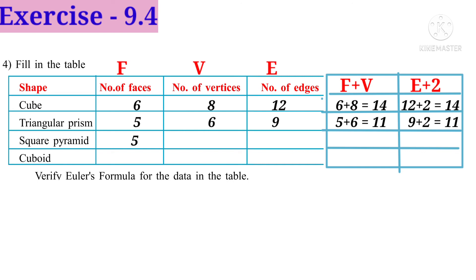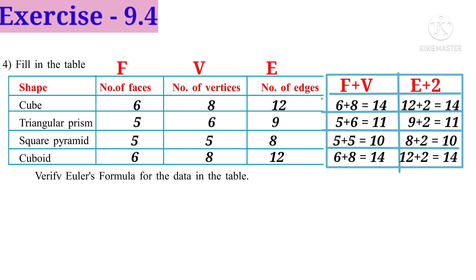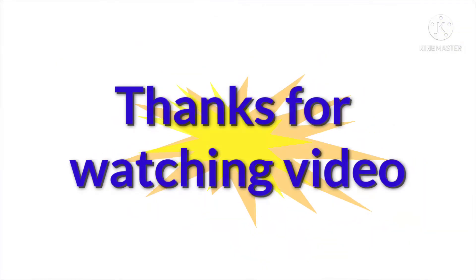For a square pyramid: faces are 5, vertices are 5, edges are 8. F plus V equals 5 plus 5 equals 10, and E plus 2 equals 8 plus 2 equals 10 — both equal. For a cuboid: faces are 6, vertices are 8, edges are 12. F plus V equals 6 plus 8 equals 14, and E plus 2 equals 12 plus 2 equals 14 — both equal. So Euler's formula F plus V equals E plus 2 is verified for all the above 3D shape figures.